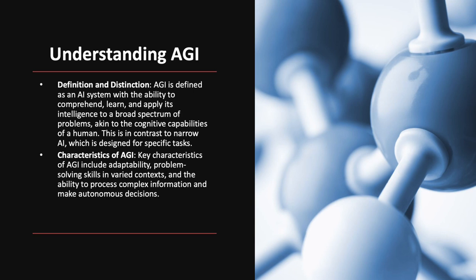Understanding AGI. AGI, or Artificial General Intelligence, is characterized by its versatile cognitive capabilities comparable to human intelligence. Unlike narrow AI, which is tailored to particular tasks, AGI can understand, learn, and apply knowledge to a wide array of problems. The defining feature of AGI is its adaptability, advanced problem-solving abilities in diverse situations, and the capability to handle intricate information and make independent decisions.